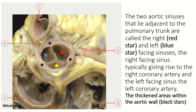These are the three aortic sinuses, and two aortic sinuses are near the pulmonary trunk. This is the cross-section of the pulmonary trunk. From these two aortic sinuses, the coronary arteries arise. The red star indicates the anterior aortic sinus — from this sinus, the right coronary artery arises. This is the left posterior aortic sinus, also near the pulmonary trunk, and from this the left coronary artery arises. This aortic sinus is away from the pulmonary trunk and is known as the non-coronary aortic sinus.